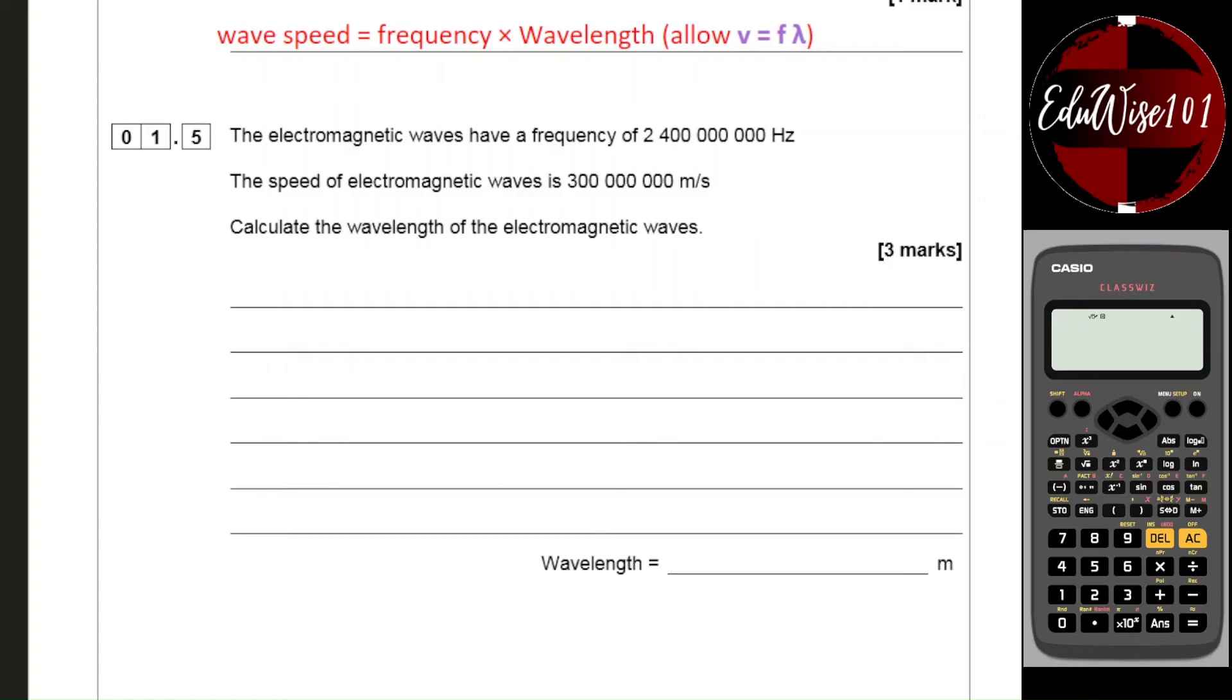So the speed of electromagnetic waves is 300 million meters per second. Calculate the wavelength of the electromagnetic waves. So we can use the equation that we have given above and we need to rearrange the equation. So v equals f lambda, so when we rearrange it the wavelength or the lambda is v divided by the frequency.